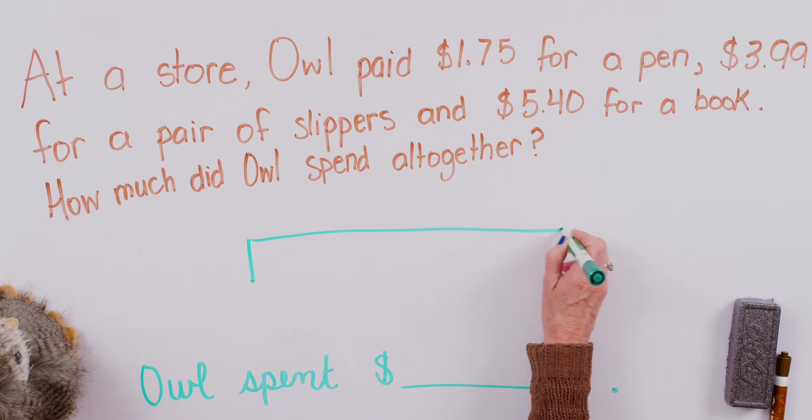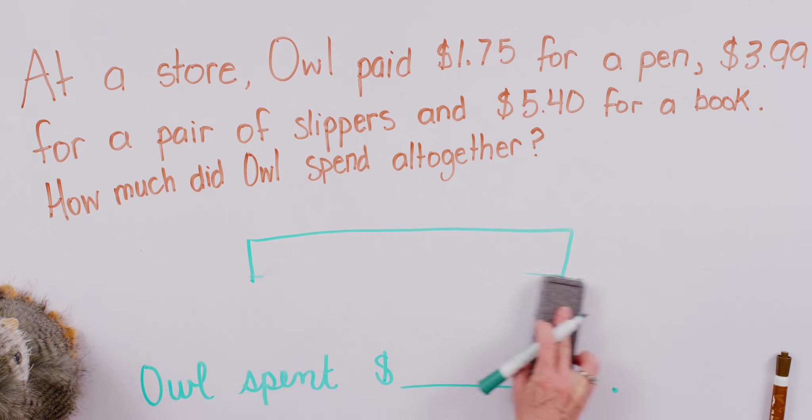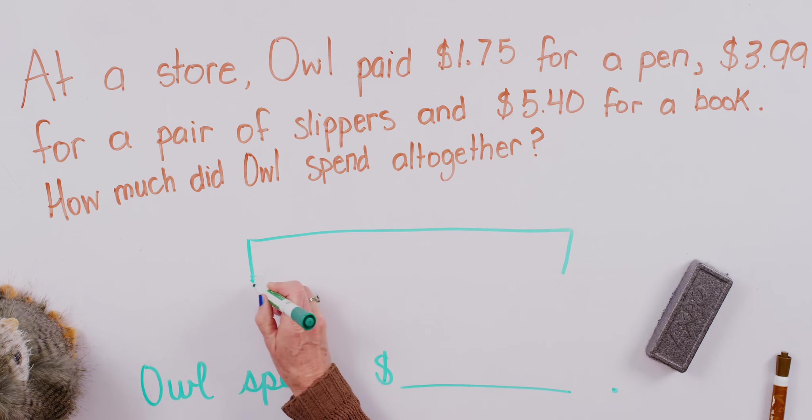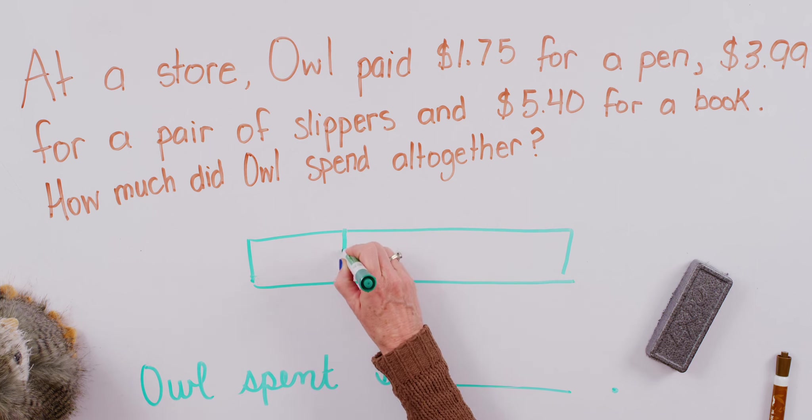I'm going to do a nice size bar because Owl makes how many different purchases? Yeah, three different purchases, so let's fit them all together in our bar. Alrighty, so we've got this $1.75 for a pen, $3.99 for a pair of slippers, and $5.40 for a book. In this case, we don't need to worry about the size of the little sections of our bars. We're not trying to represent that, but we just, in a sense, want enough room to write our numbers.